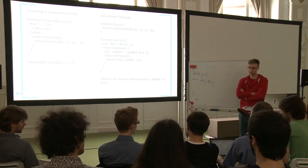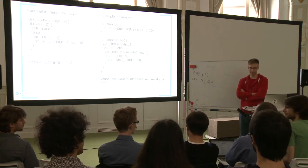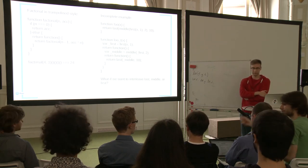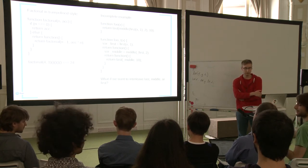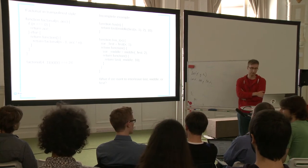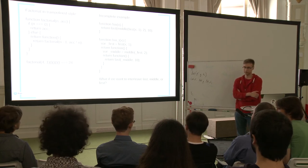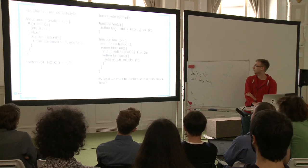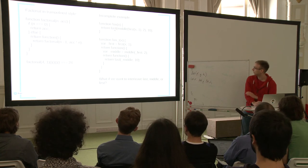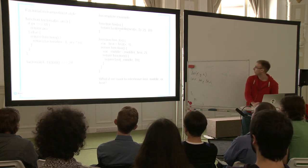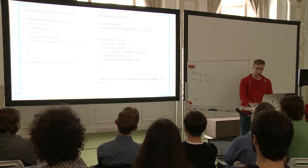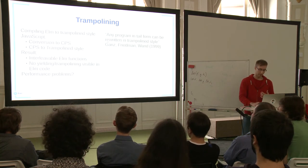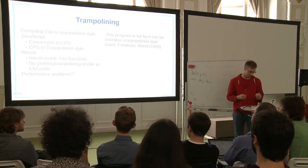This transformation is also related to continuation passing style (CPS). To implement trampolining, you can convert your code into CPS and then convert that to trampoline style. This function here is still in tail form — the last call 'last' is in tail form — but the inner calls are not. What we'd like to do is convert the function so that everything becomes a tail form, which is where CPS comes in.